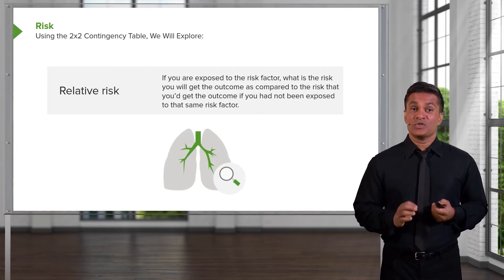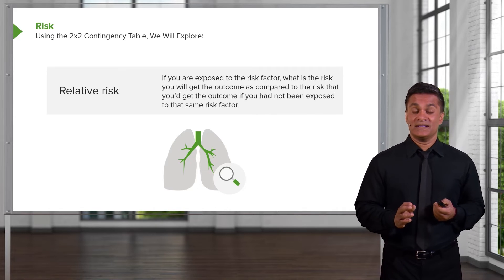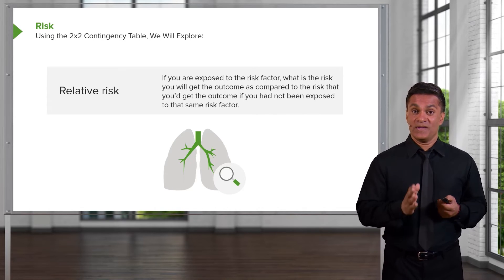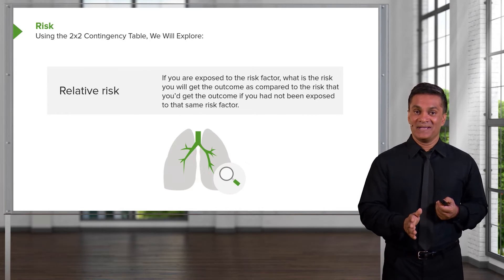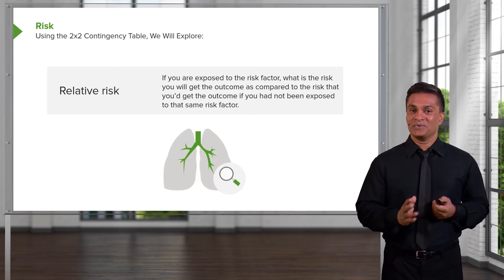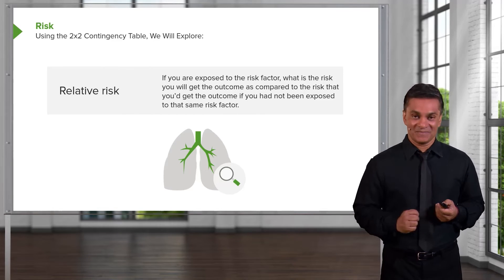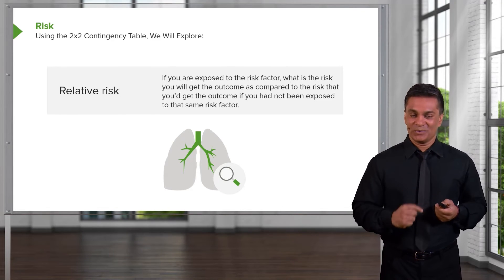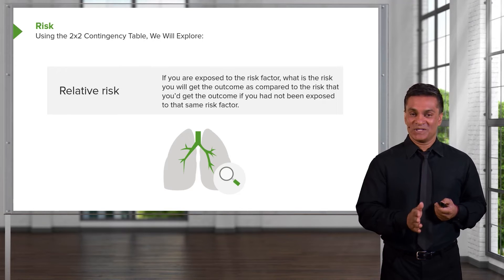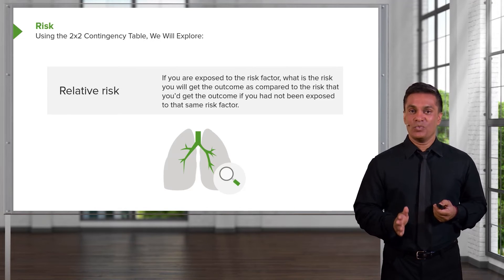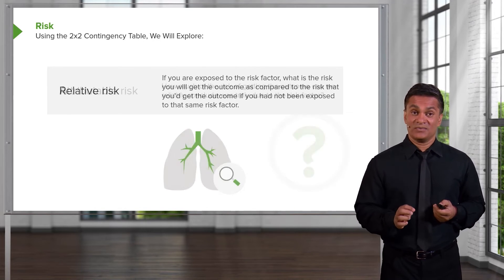The relative risk, on the other hand, is when I compare the absolute risk of getting the outcome if I'm a smoker to the absolute risk of getting the outcome if I'm not a smoker. To put that in general terms, the risk of the outcome when you're exposed versus the risk of the outcome when you're not exposed. That's relative risk.